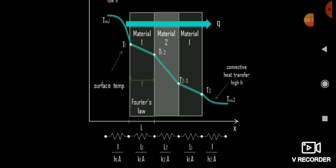The total series resistance is: R_net = 1/(h1·A) + L1/(k1·A) + L2/(k2·A) + L1/(k1·A) + 1/(h2·A). Here L1 is the length of material 1, with conduction resistance = L/kA. h2 is the convective heat transfer coefficient of the fluid at the rightmost side at temperature T3.